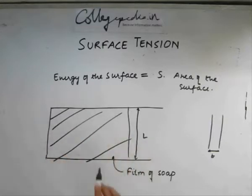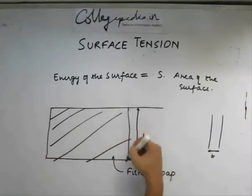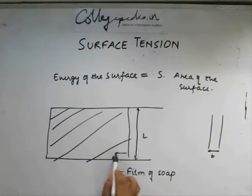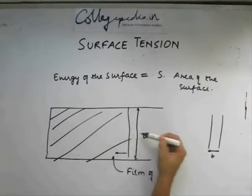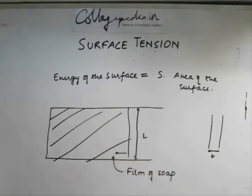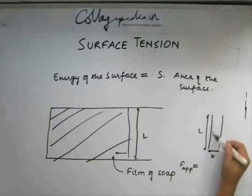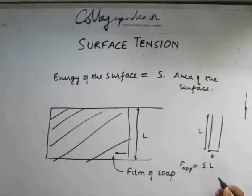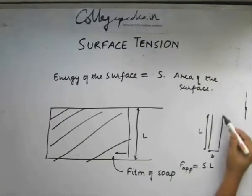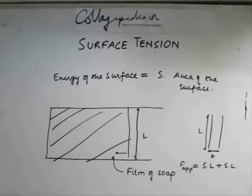So what the soap film will try to do is it will try to reduce its surface area. If it tries to reduce its surface area this line will try to move in this direction. So what we need to do is apply a force in this direction so that this does not move. The force which is applied has to be equal to the force applied on this line of length L. The force applied on this line L is s times L and the force which is applied on this line is also s times L. So the force applied net on this soap film will be equal to 2 times s into L.